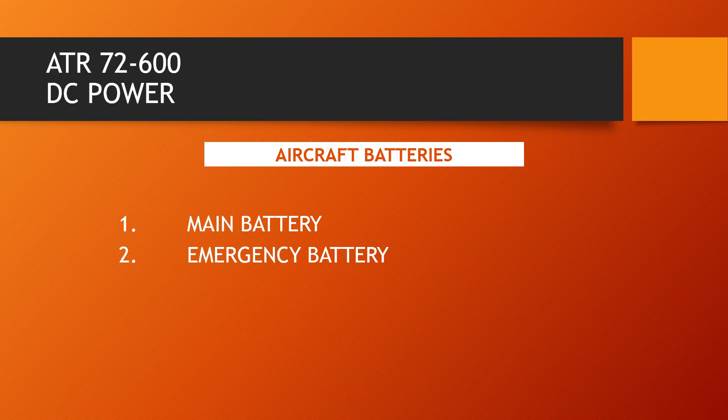Second, the Emergency Battery: a 24-volt nickel-cadmium battery of 17 ampere-hour, used to avoid power transients on critical equipment during engine starts, and ensures power to the emergency network when the main battery is completely discharged and the under-voltage override push button is pressed.